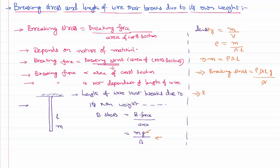That implies breaking stress can be expressed as: density of the material × length of the wire × acceleration due to gravity. Therefore, the length of the wire which breaks due to its own weight, L, equals breaking stress divided by density of that material and acceleration due to gravity. This is how we can calculate the length of the wire which breaks due to its own weight. Thank you for watching — keep coming back for more video lessons, thank you.